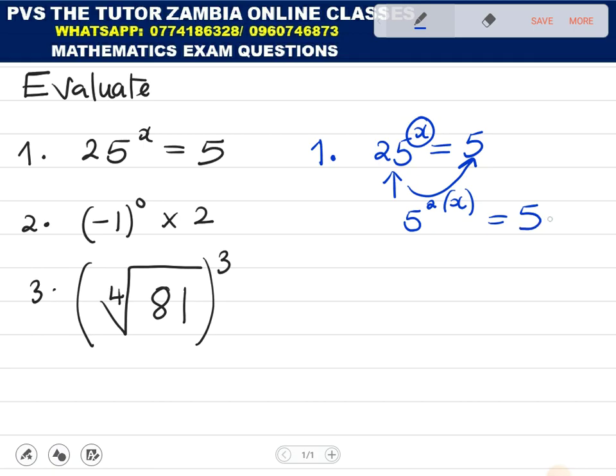The purpose of doing this is to eliminate the bases here so that we can have a proper equation. Now, 5 to the power 1 is just the same as 5. So we are having 2x equal to 1.